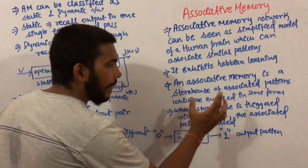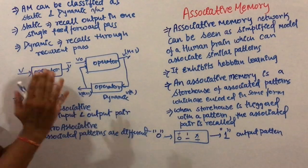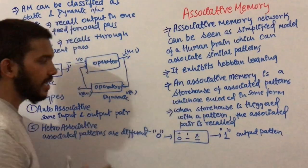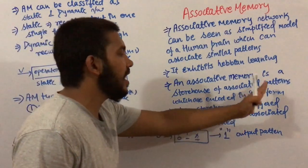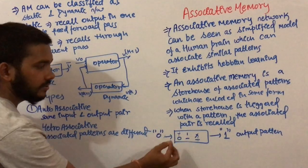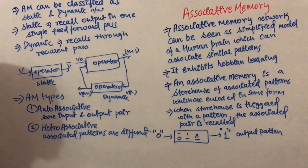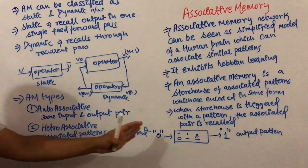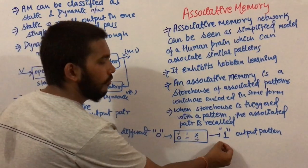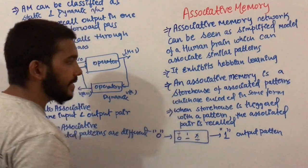An associative memory is a storehouse of associated patterns which are encoded in some form. When the storehouse is triggered with a pattern, the associated pair is recalled. For example, in a storehouse we have 0, 1, minus 1, multiplication, division. If you recall binary zero, you will not recall divide or multiplication — you will recall one. So in associative memory, once the storehouse is initiated, the corresponding patterns are recalled.